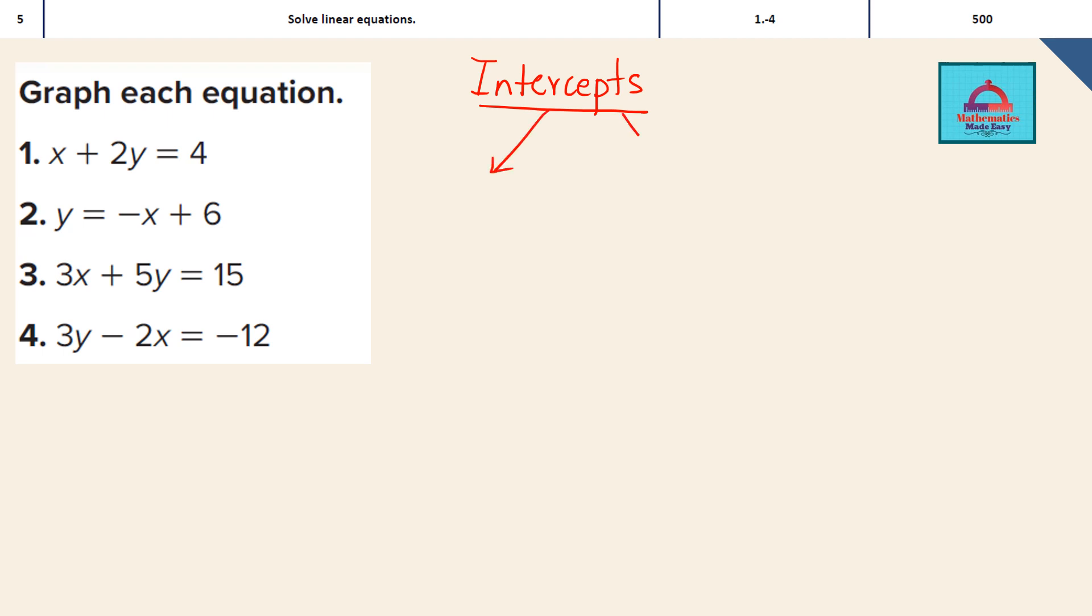So there are 2 types of intercepts that you can find for a given graph. One is the x-intercept, another is the y-intercept. So remember, x-intercept is the point on the graph where it touches the x-axis. So at that point, y is going to be 0.